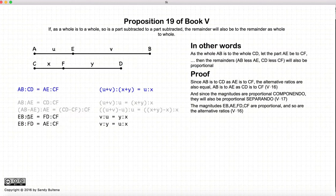And because these four magnitudes are proportional, so will be the alternative ratio, Proposition 16 again. So what we are doing again is we are swapping AE with FD, and now these two ratios are equal. So EB to FD is equal to AE to CF.